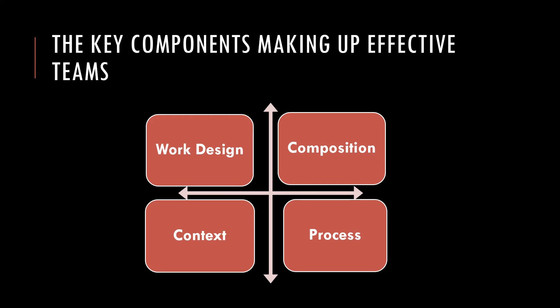We have already discussed in our last session how a team is useful for an organization and what should be the characteristics of an effective team. So now let's see what are the key components for making up an effective team. As you can see on the slide, there are four key components which can help to make an effective team, or we can say there is a model to create an effective team.